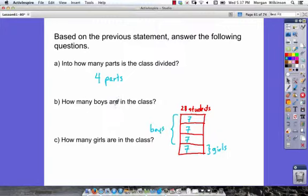How many boys are in the class? Well, 3 fourths were boys, so we've got 7, 7, and 7. 7 times 3, that's equal to 21 boys. And we've got our answer.